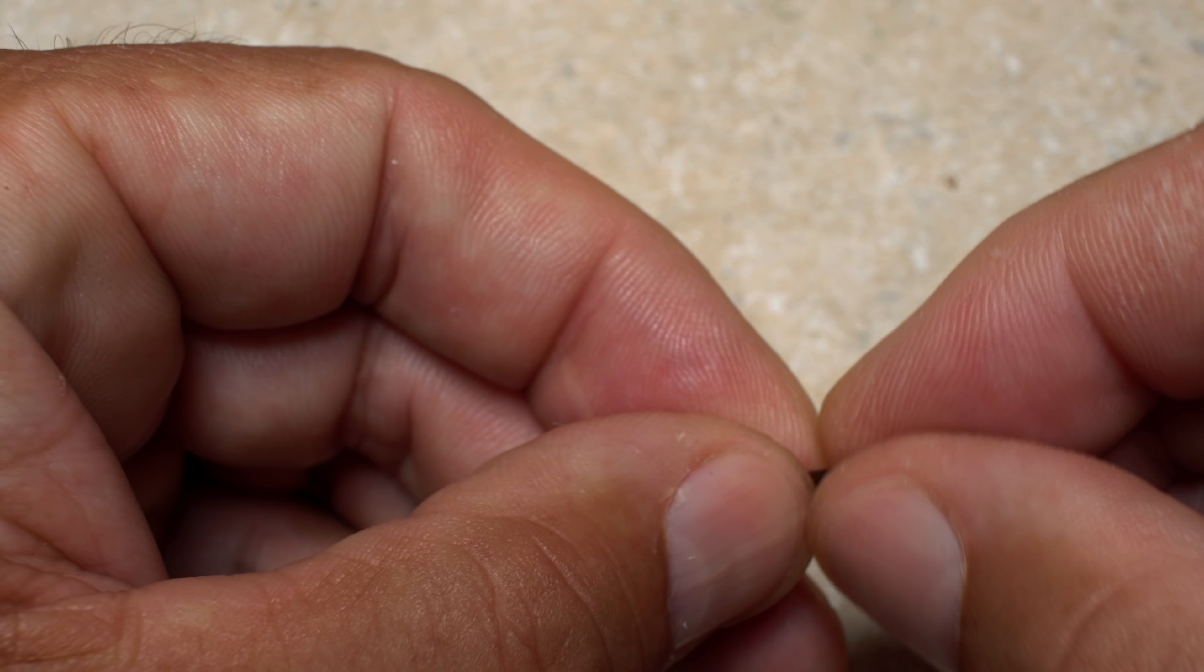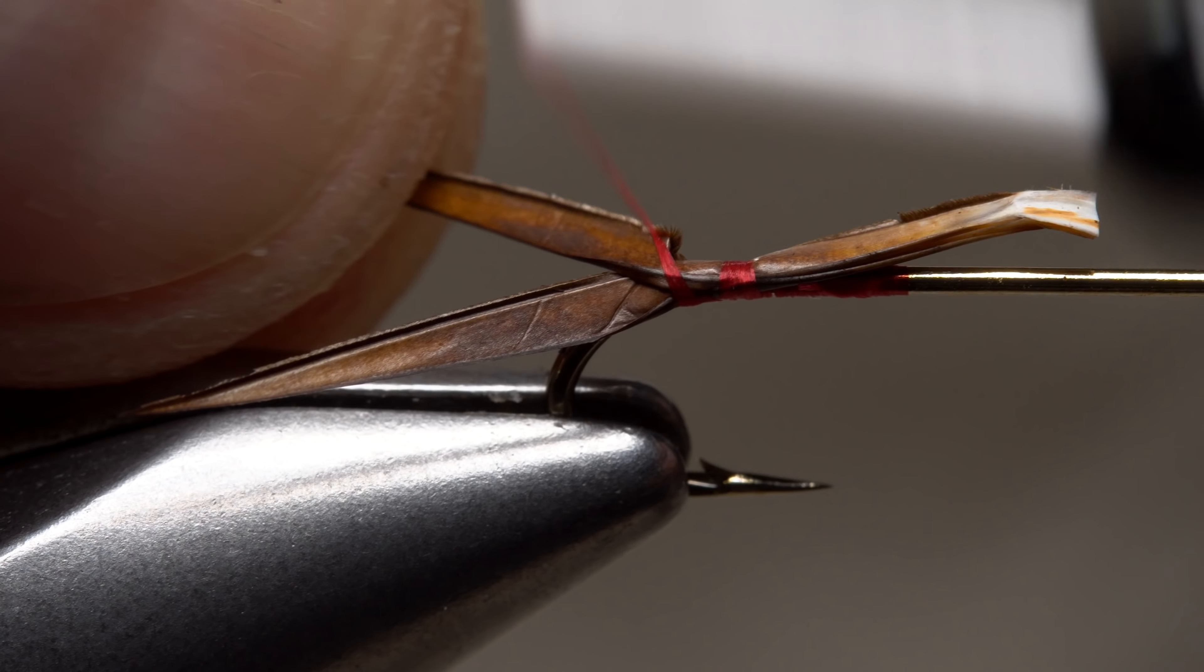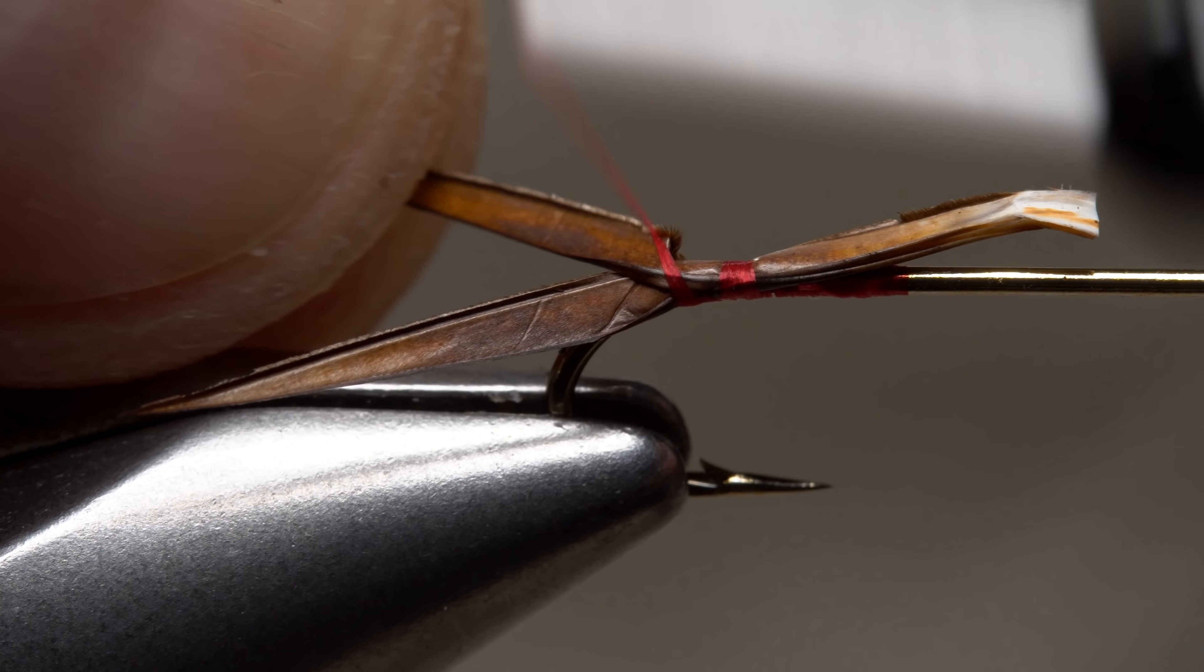Take thread wraps to lock the bottom biot at this canted angle. Then manipulate the top biot so its curved tip points away from you and take thread wraps to lock it into position.